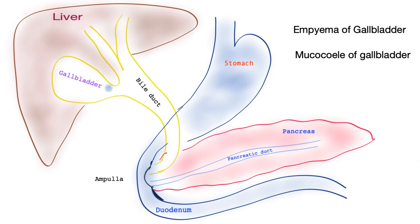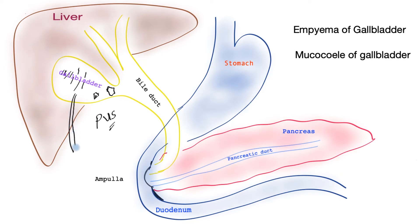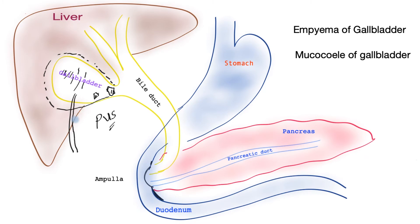Empyema of the gallbladder is a condition where a stone blocks the exit and the gallbladder becomes infected, with the infection turning into pus. This is a dangerous condition. Treatment typically involves antibiotics and sometimes draining the gallbladder through a tube inserted under local anaesthetic using ultrasound, and ultimately removal of the gallbladder. Mucocele of the gallbladder is a similar condition, but rather than infection, fluid collects in a thickened gallbladder, sometimes causing it to enlarge quite significantly. Again, the treatment is removal of the gallbladder.